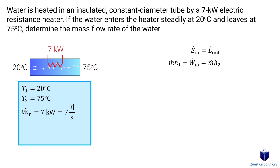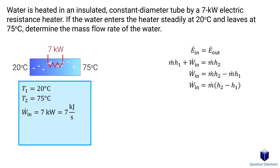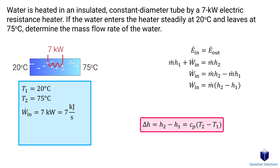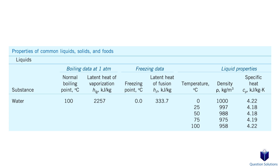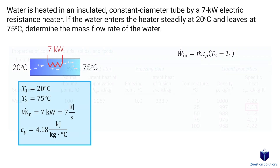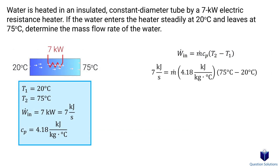For output, we only have mass flow and enthalpy since there is no heat loss or work output. Let's bring the mass flow terms to one side and factor out the mass flow, since we have a difference of enthalpy. We can use the enthalpy equation to figure it out — all we need is the specific heat of water, which we find from a table. Now let's plug our values in and solve for the mass flow of the water.